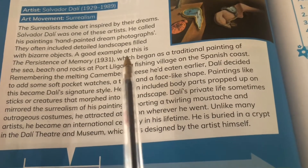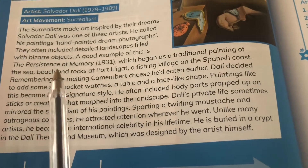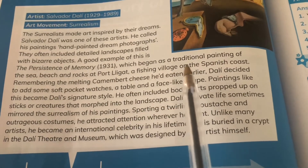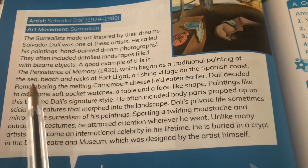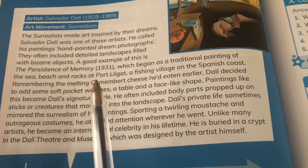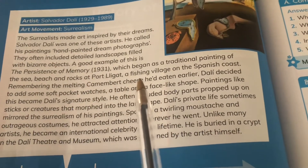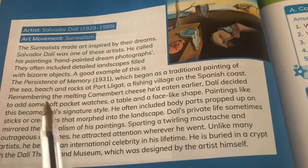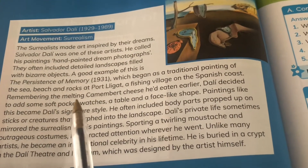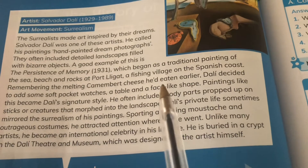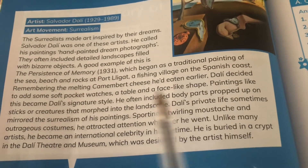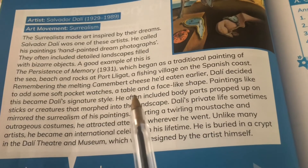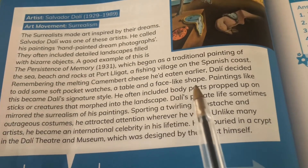A good example of this is the Persistence of Memory, 1931, which began as a traditional painting of the sea, beach and rocks at Port Liggett, a fishing village on the Spanish coast. Remembering the melting camembert cheese he'd eaten earlier, Dali decided to add some soft pocket watches, a table and a face-like shape.